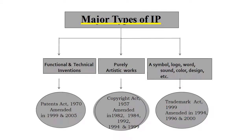Types of intellectual property: three broadly categorized types. Functional and technical inventions are related to the Patent Act 1970, amended in 1999 and 2005. Purely artistic work is related to the Copyright Act 1957, amended in 1982-84. Then symbols, logos, words, sounds, colors, and designs are related to the Trademarks Act 1999, amended in 1994, 1996, and 2000.